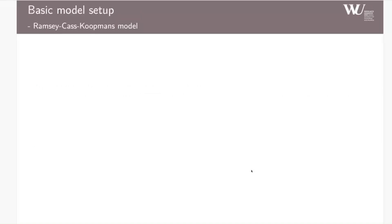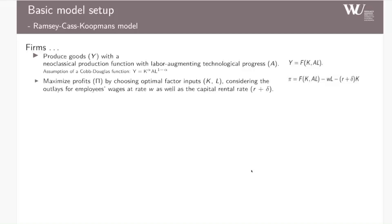To come to the basic model setup, we have firms on the one side. Firms on the production side produce with a neoclassical production function with labor-augmenting technological progress. Here we assume a Cobb-Douglas function, so keep it really simple. They maximize their profits by choosing optimal factor inputs, capital K and labor L, and thereby have to consider the outlays for employees' wages at the wage rate and their capital rental rate.